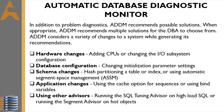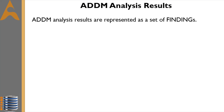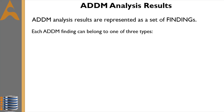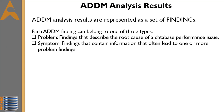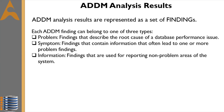ADDM analysis results are represented as a set of findings. Each ADDM finding can belong to one of three types: problem findings, which describe the root cause of a database performance issue; symptom findings, which contain information that often leads to one or more problem findings; and information findings, which are used for reporting non-problem areas of the system.